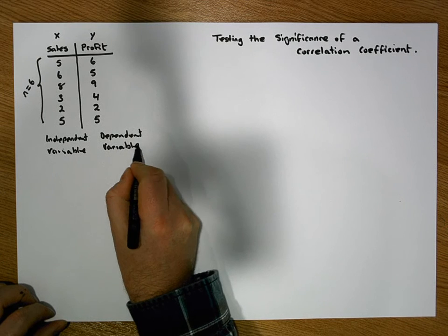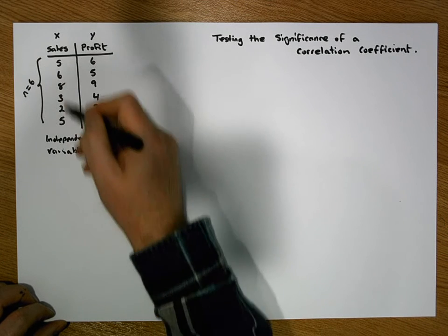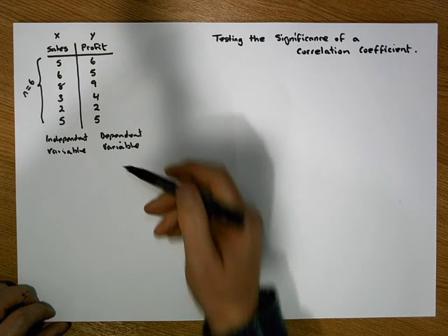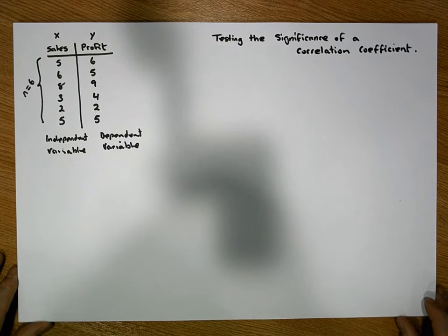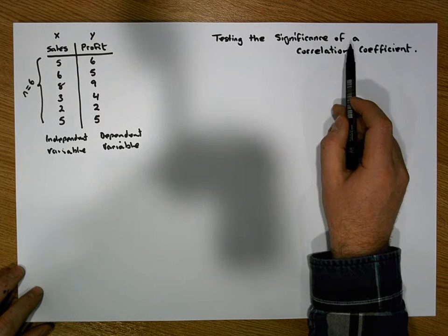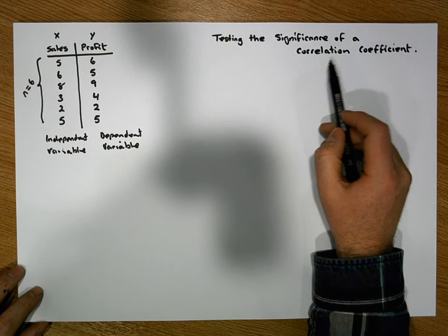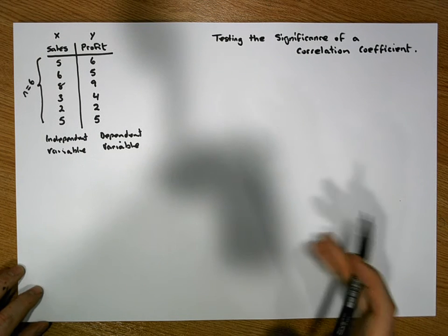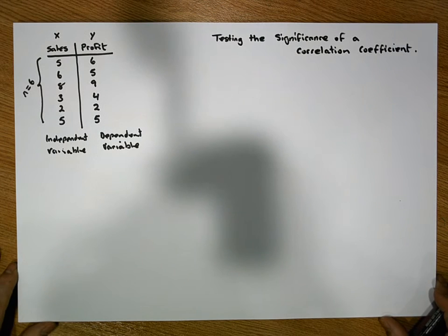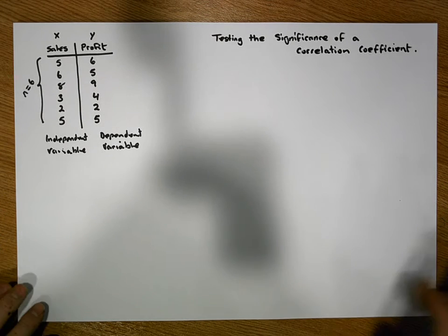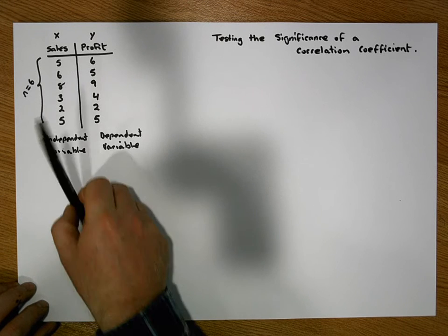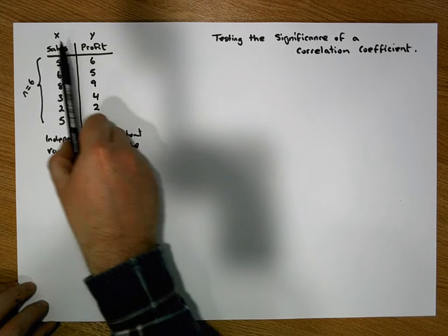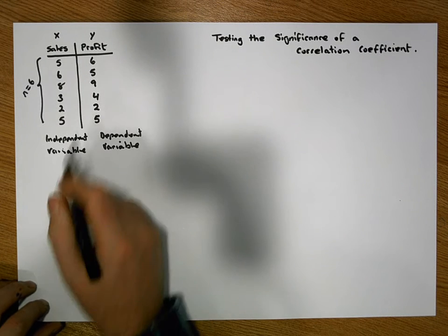Profit will be our dependent variable. So what we are hypothesizing is that profit is dependent on sales. That's why we've labeled these variables as X for our independent variable and Y for our dependent variable. The first part of conducting a significance test of a correlation coefficient is that we need to have the correlation coefficient in the first place. I'm not going to do the calculation here — there is a previous video that shows you how to calculate the correlation coefficient between two variables.